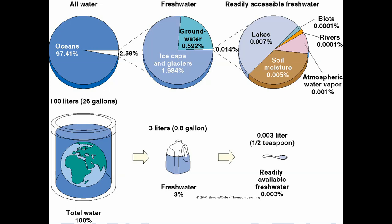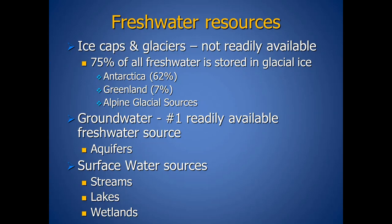Anybody who has been to Lake Mead recently knows how serious the problem of overuse is. About 75% of freshwater is stored in glacial ice — the majority in Antarctica at about 62%, 7% in Greenland, and the other 31% in Alpine glaciers. These are smaller bodies of ice found at the very tips of tall mountain chains: the Himalayas, Alps, Andes, Sierras, and Rockies.